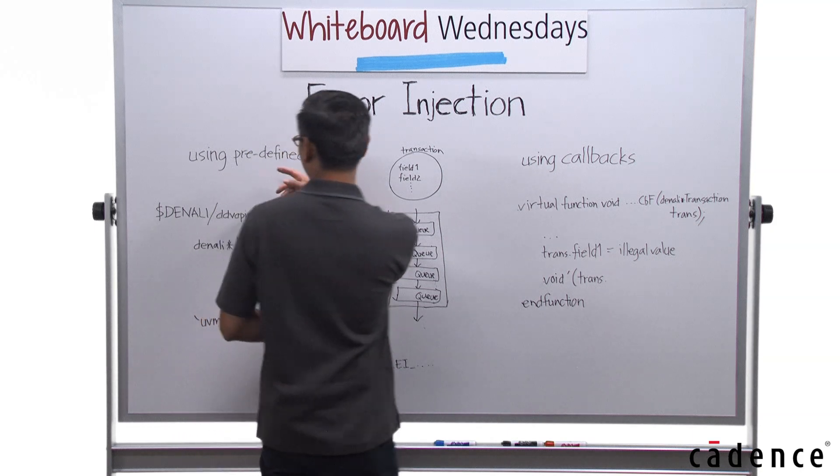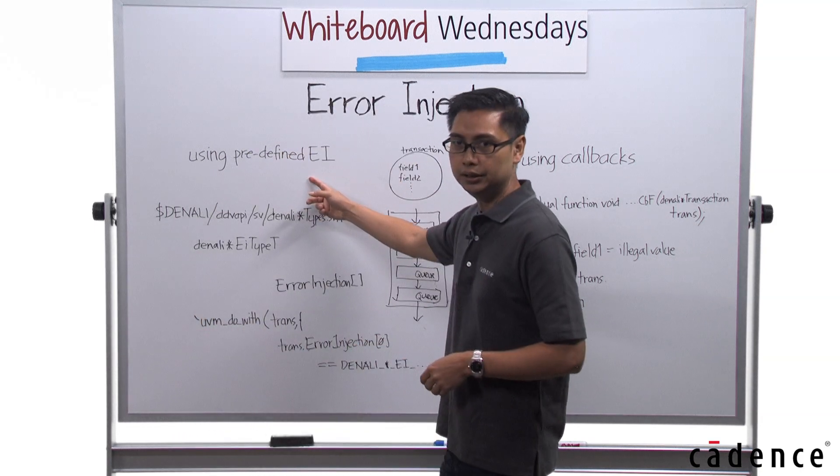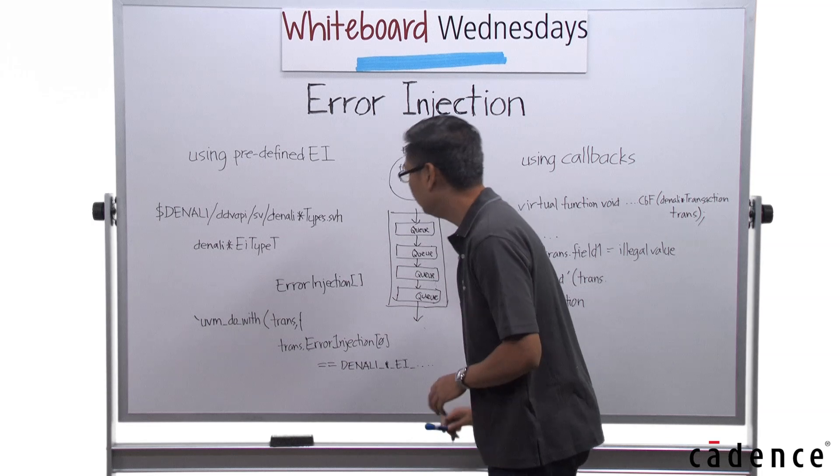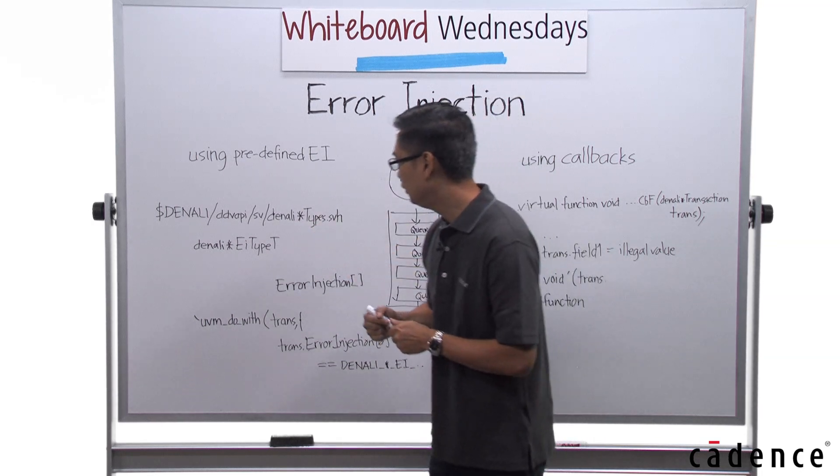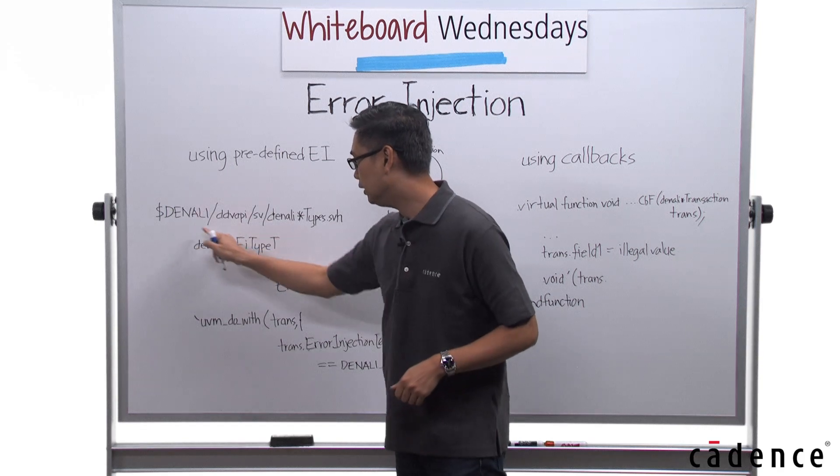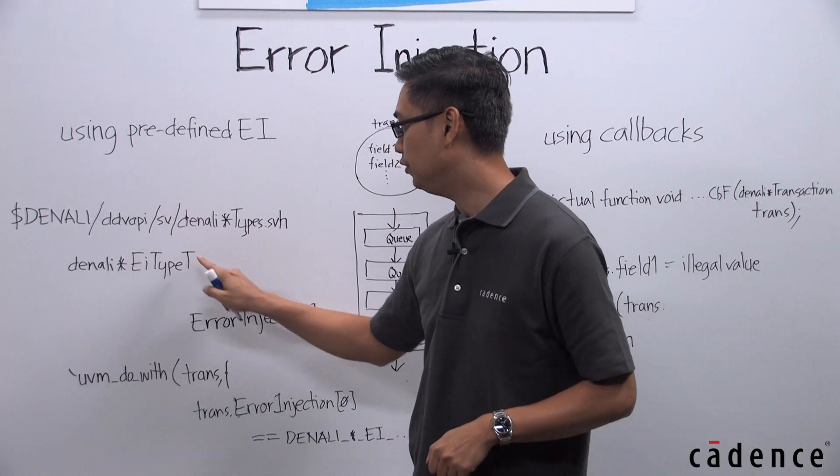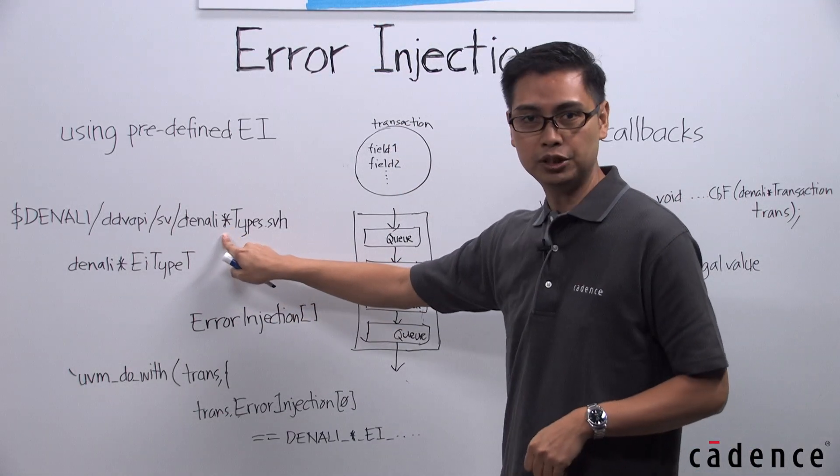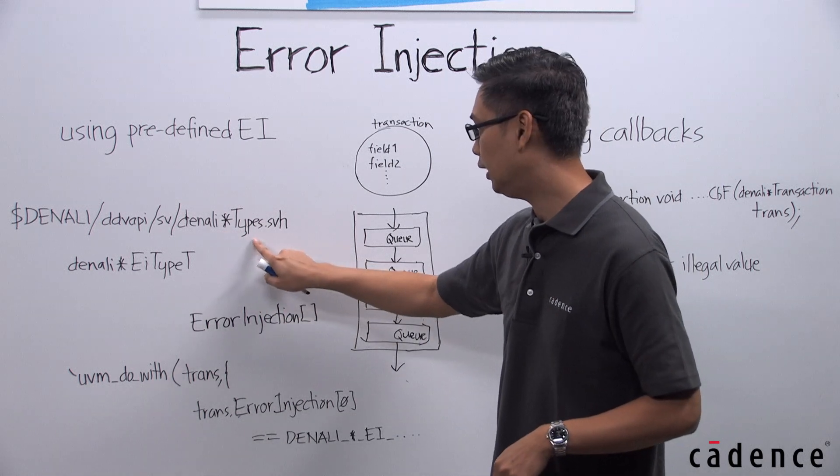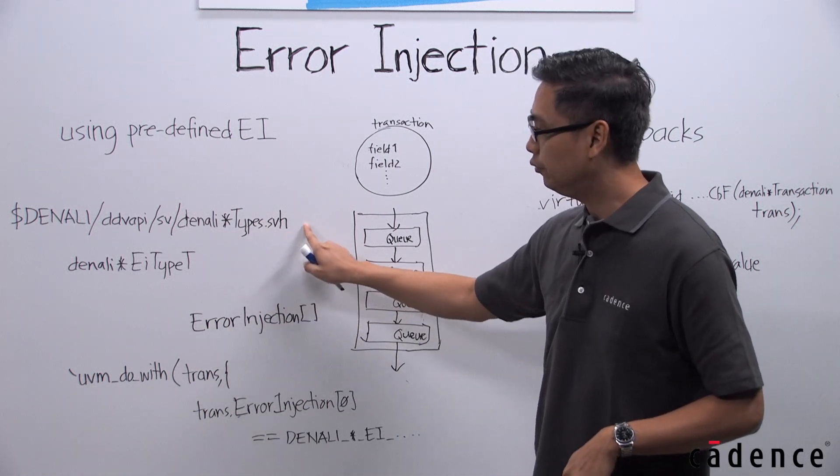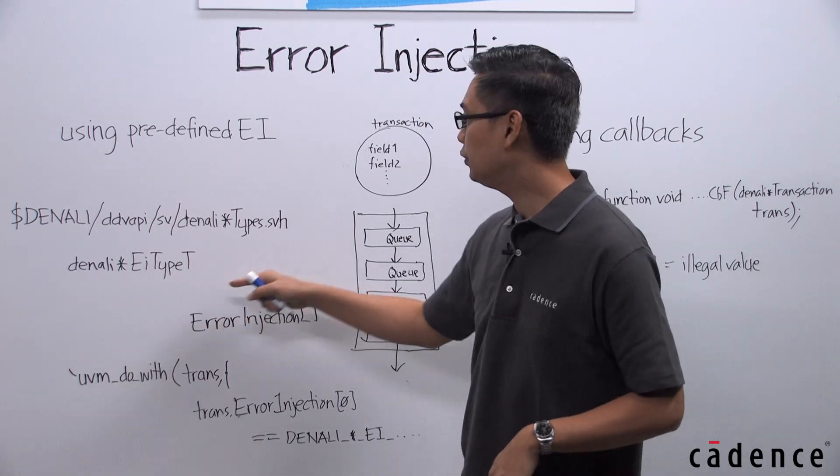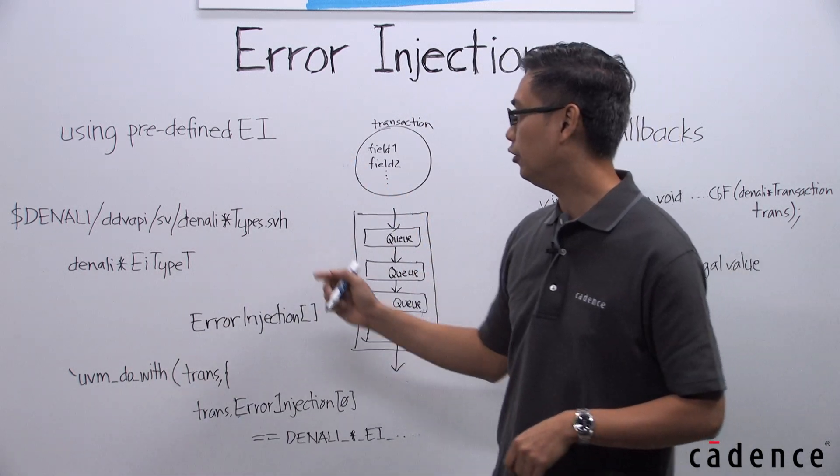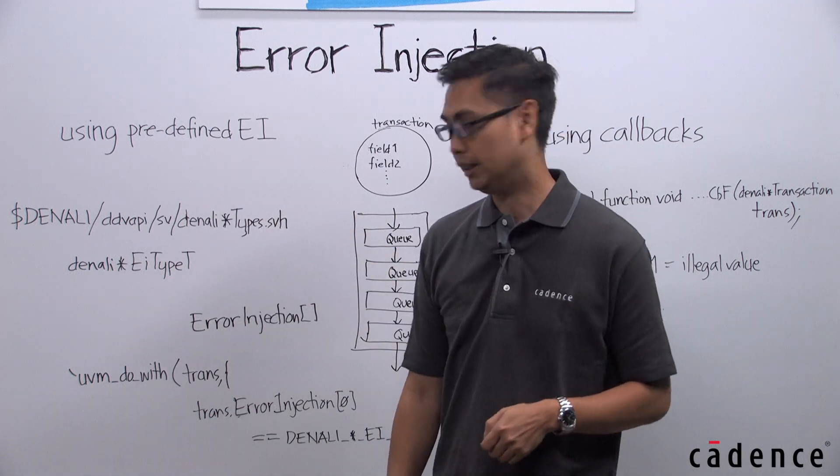So, with using predefined error injections, which you can find at this path, $denali/ddvapi/svdenali, the specific protocol that you're using, types.svh. Within that file, you can find the error injection type, and you can see the enumerated list of error injections or EIs.